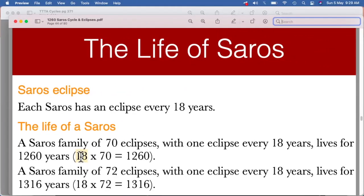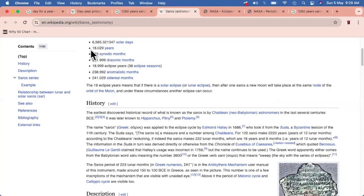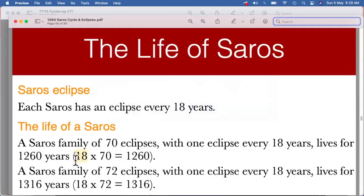And then and only then we'll be able to understand more about that part. So these are the calculations for Saros: that is 18 into 70, that we get 1260. And these are like the Saros families. We'll talk about the Saros families maybe in the next videos.